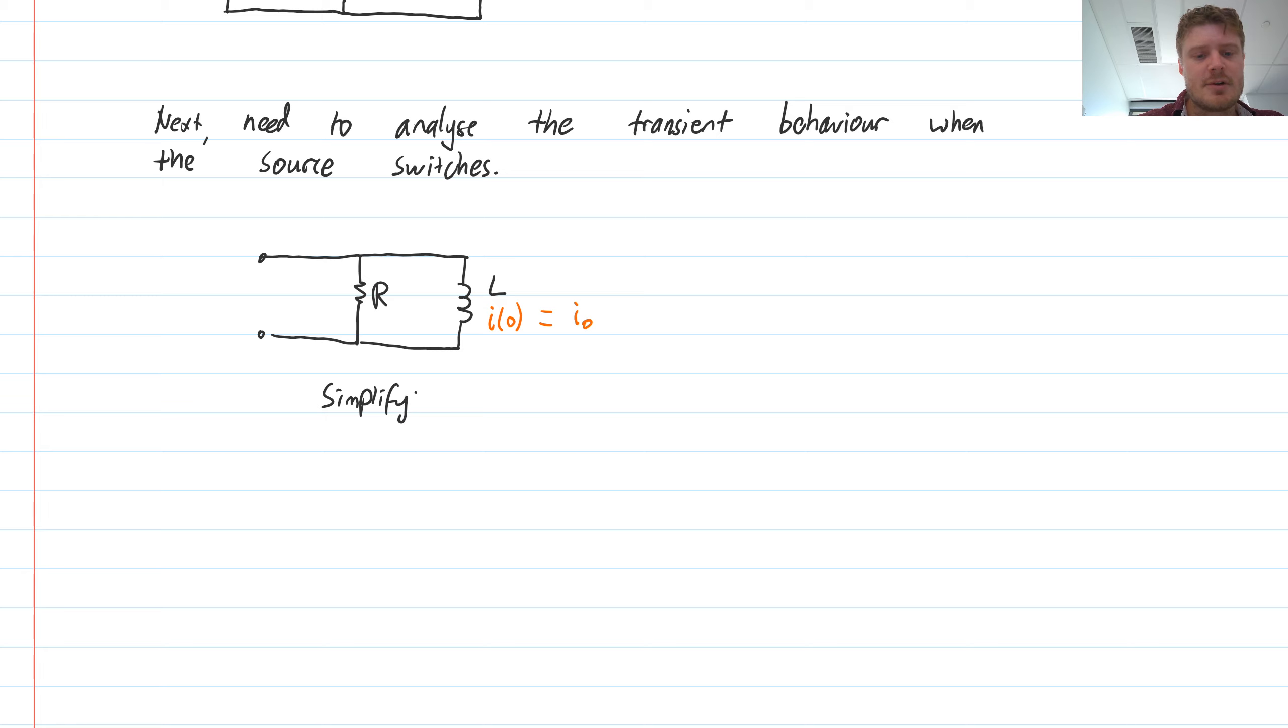So I'm just going to clean up that drawing a little bit. So it is literally these two elements, R and L, where we specify an initial current I of zero. So I of time of zero is equal to I naught, the number that we just solved for.